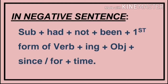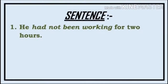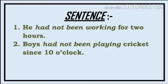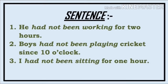Now students, in negative sentence, the format is: subject + had + not + been + first form of verb + ing + object + since or for + time. Yahaan par hum 'had' aur 'been' ke beech mein 'not' lagaate hain. Let's have a look at a few sentences. He had not been working for two hours. वे दो घंटे से कार्य नहीं कर रहा था. Boys had not been playing cricket since 10 o'clock. लड़के दस बजे से क्रिकेट नहीं खेल रहे थे. I had not been sitting for one hour. मैं एक घंटे से नहीं बैठ रहा था.